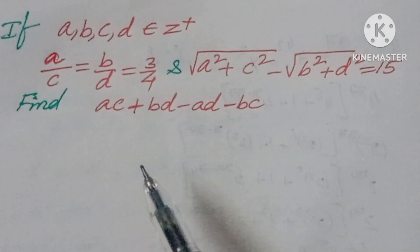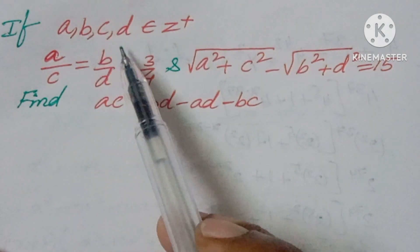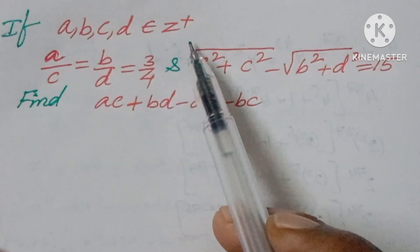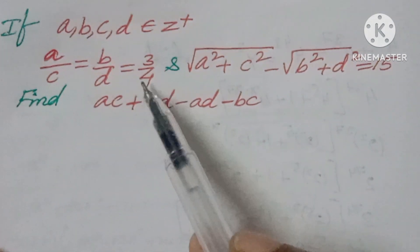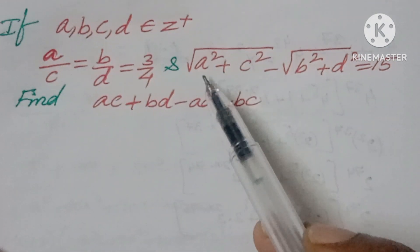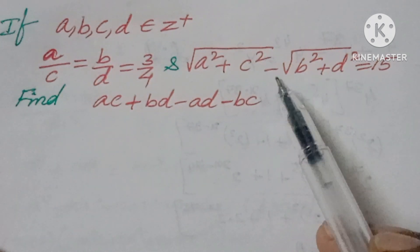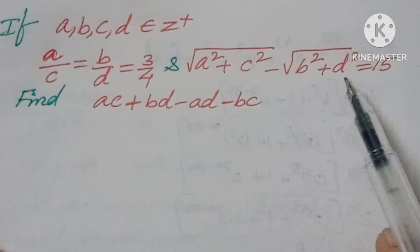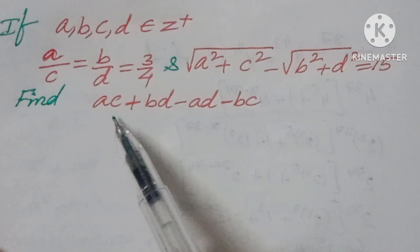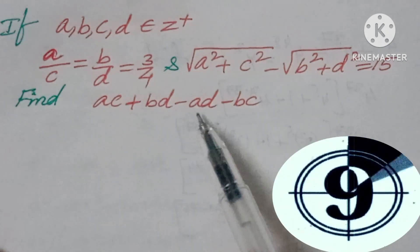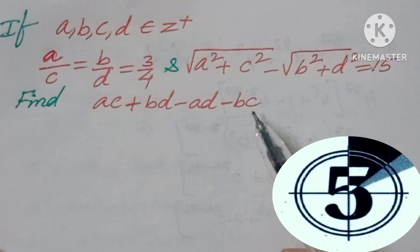Welcome back to NCG Max. Today we're going to see one logical question: if a, b, c, d are positive integers, a/c = b/d = 3/4, and √(a²+c²) − √(b²+d²) = 15, then find the value of ac + bd − ad − bc.